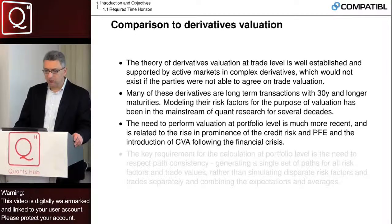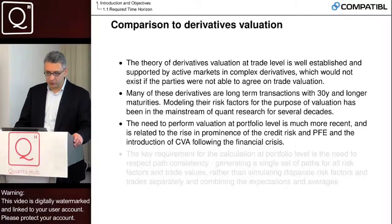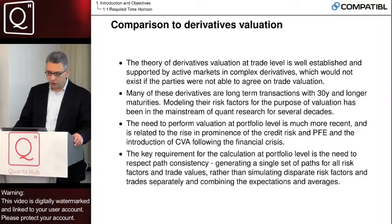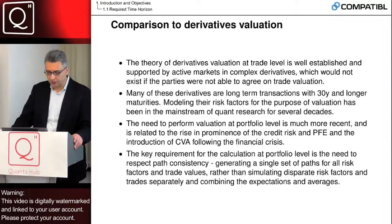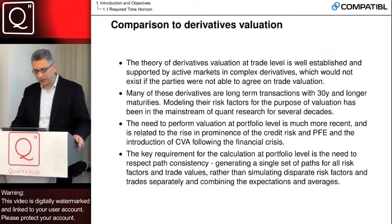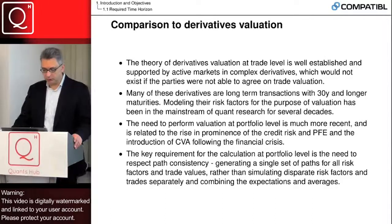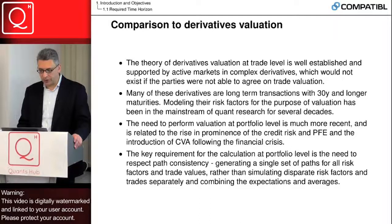However, the need to perform valuation at the portfolio level is much more recent, and is related to the rise in prominence of credit risk, potential future exposure, and the introduction of CVA following the financial crisis. The key requirement for calculation at the portfolio level is the need to respect path consistency — generating a single set of paths for all risk factors and trade values, rather than simulating disparate risk factors and trades separately and then combining the expectations and averages.